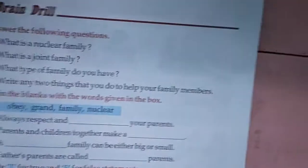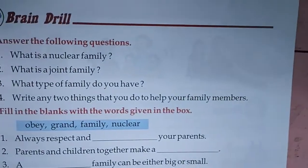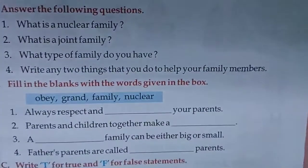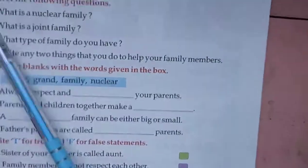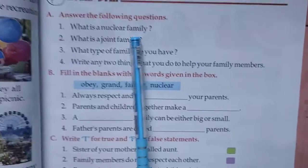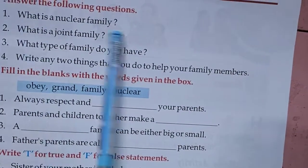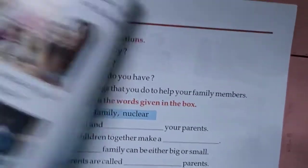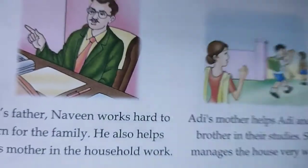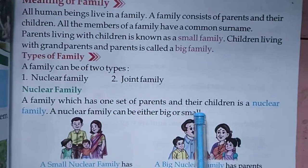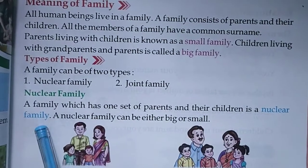Now, children, let us discuss the exercise today — question and answer. Question: What is a nuclear family? What is a nuclear family and joint family? The answer is here. A family which has a set of parents and their children is a nuclear family.